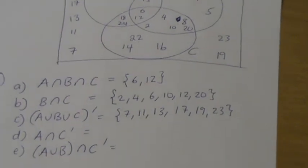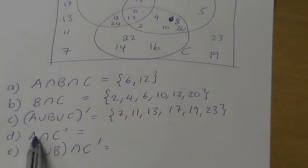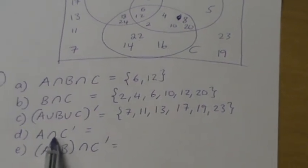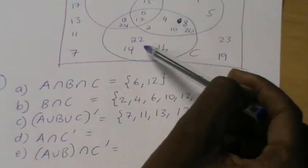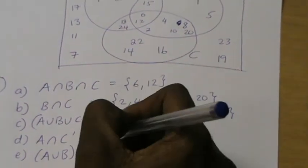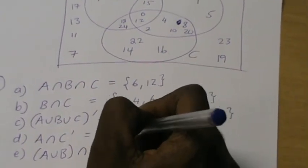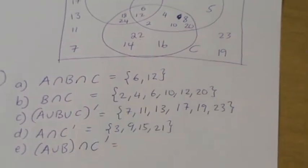A intersect C complement, that means elements inside A but outside C. So they must be inside the circle but not inside this one, so it's 3, 9, 15, 21.